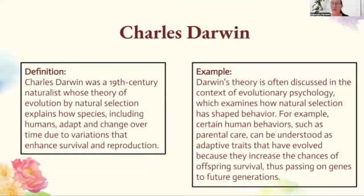Next, we're going to look at Charles Darwin. He comes up a lot — in biology, human geo, and psychology. He was a 19th century naturalist whose theory of evolution by natural selection explains how species, including humans, adapt and change over time due to variations that enhance survival and reproduction — the whole survival of the fittest. When we think of that, we think of Charles Darwin.